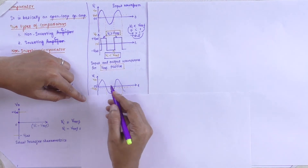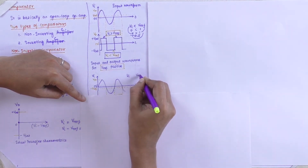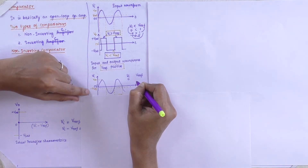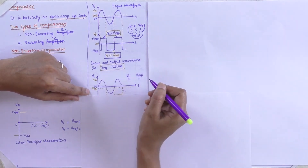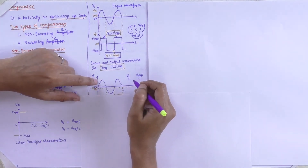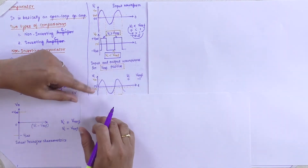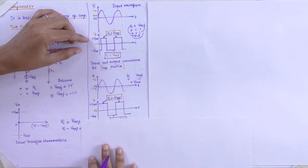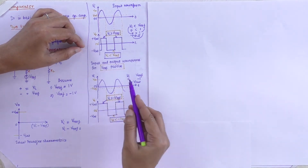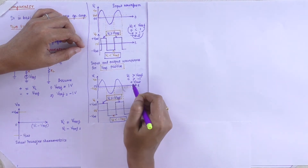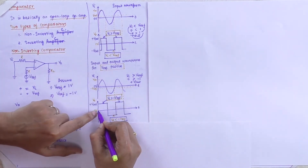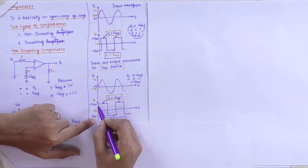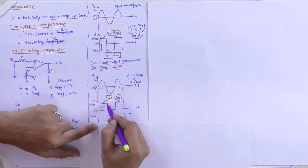Consider V reference as minus 1 V. Initially, starting with input voltage as 0 V, V reference is a negative value. Here 0 is greater than minus 1. So every positive cycle starts with plus V saturation. VI value of 0 is greater than minus 1, so it starts with V saturation range. Input voltage is 0 and reference voltage is minus 1, so 0 is greater than minus 1 — it starts with V saturation and moves up.